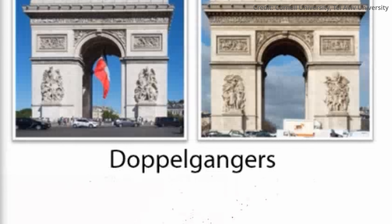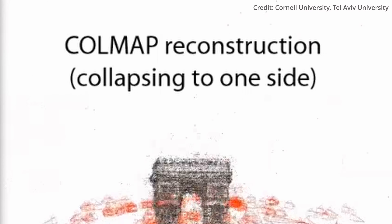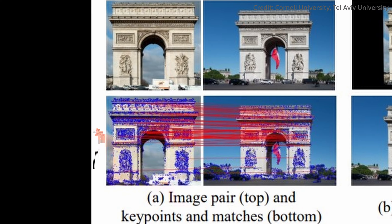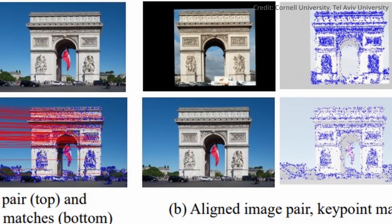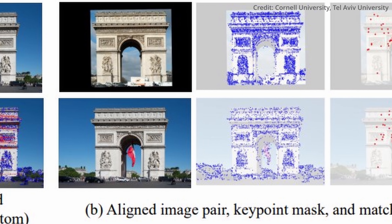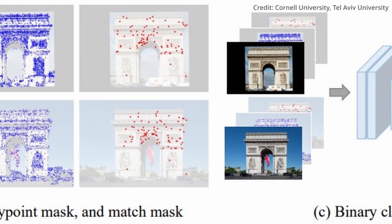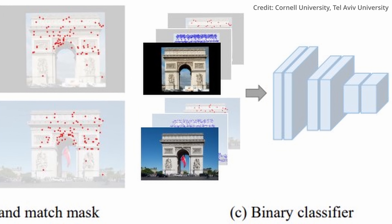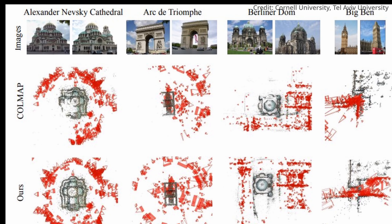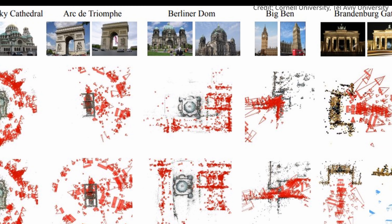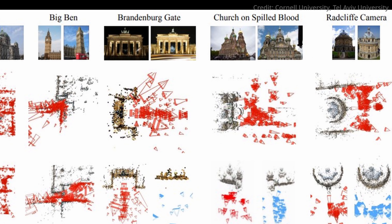The real innovation lies in the specialized network architecture designed to interpret the dataset. When given a pair of images, the system first employs feature-matching methods to identify key points and matches between the two. These points are then masked, aligned, and fed into a specially designed deep-learning classifier. This classifier produces a probability score indicating the likelihood that the given pair of images represents the same 3D surface. Where conventional models failed, the Doppelgangers architecture shines — in tests, it outclassed baseline methods and alternative designs by a significant margin.